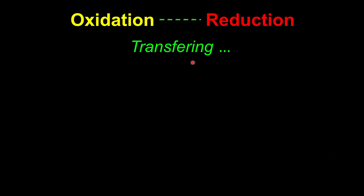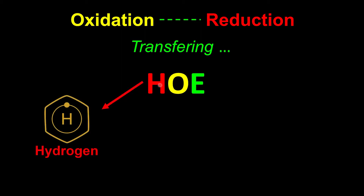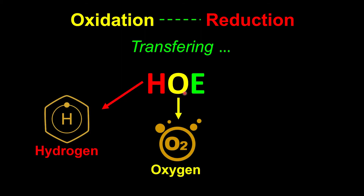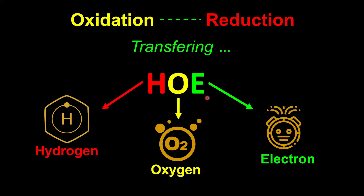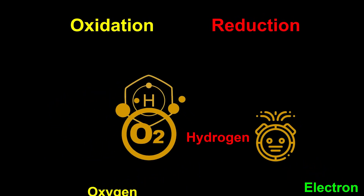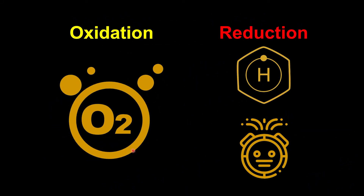Redox reaction can also be explained in terms of transferring HOE, where H represents hydrogen, O represents oxygen, and E represents electrons. Oxidation is all about oxygen: when we see an oxidation process, we think of gaining oxygen, being willing to lose everything else but oxygen. Meanwhile, reduction is the process of losing oxygen but gaining hydrogen or electrons.